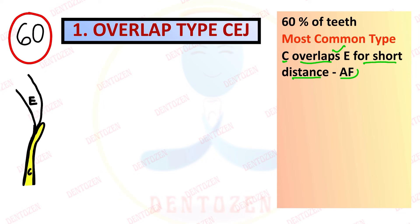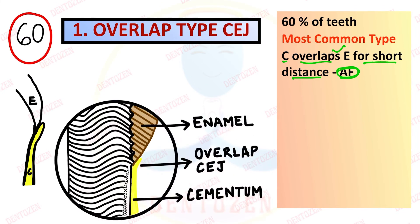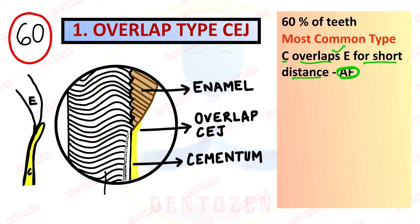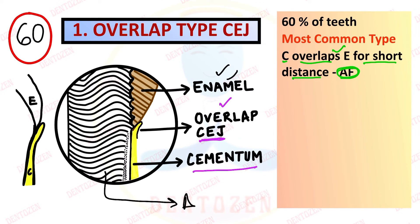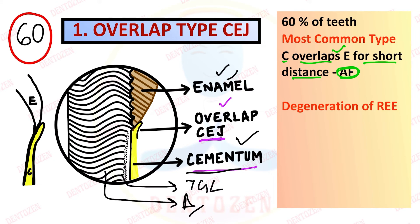Overlap type is seen in 60% - it is the most common type. Cementum overlaps enamel for a short distance, and the type of cementum formed is afibrillar. For the diagram: draw S-shaped dentinal tubules for dentine, enamel rods above, the scalloped dentino-enamel junction between them, then cementum in yellow overlapping the enamel. Between cementum and dentine you can show Tom's granular layer. This junction forms due to early degeneration of reduced enamel epithelium.